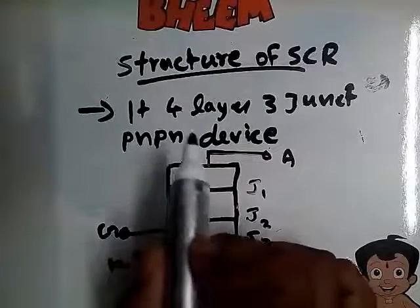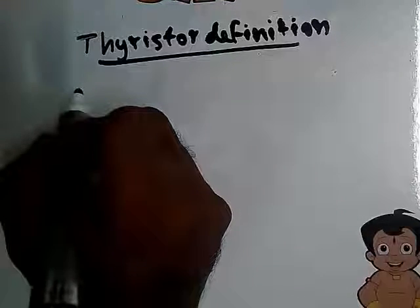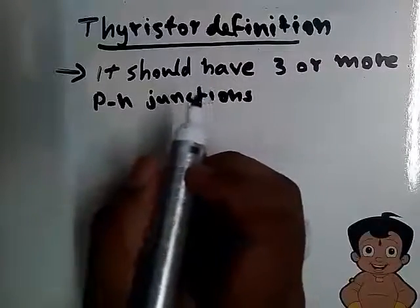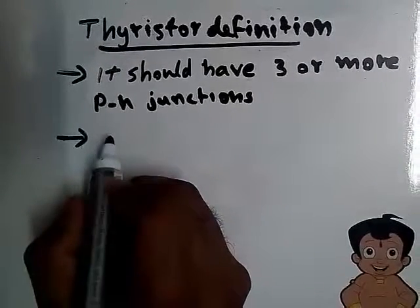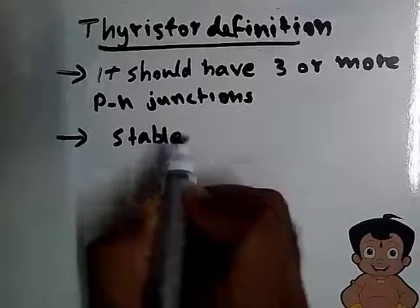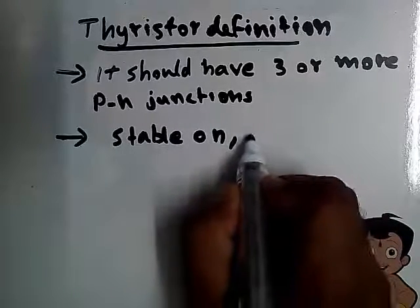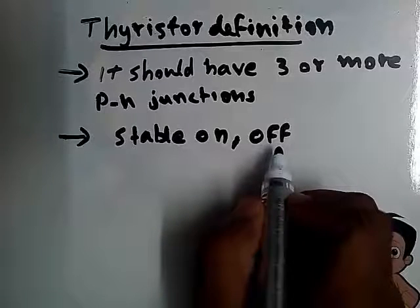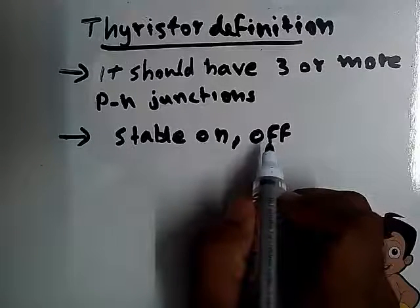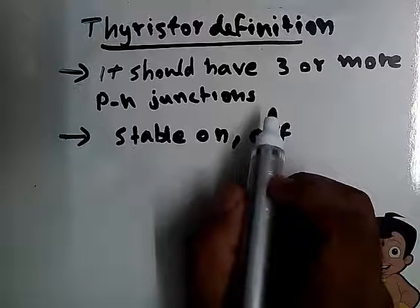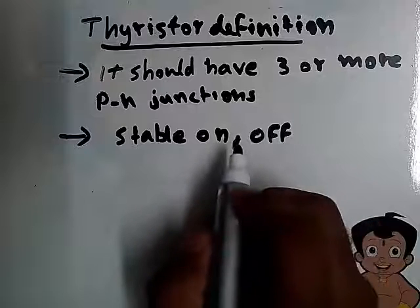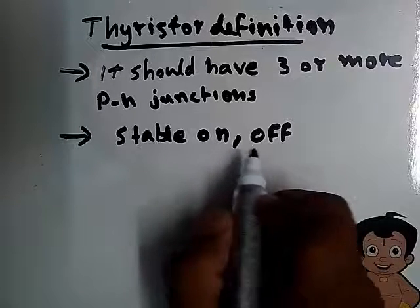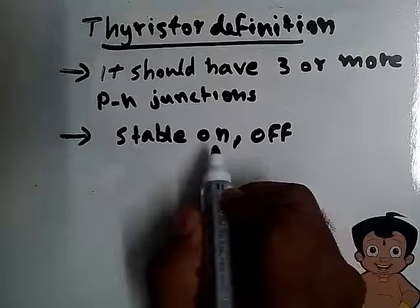From the structure of the SCR, we can state the definition of a Thyristor: it should have 3 or more PN junctions, it should have 2 stable states — a stable ON state and a stable OFF state — and it should be possible to transfer from the stable ON state to the stable OFF state, and from the stable OFF state to the stable ON state, using control mechanisms.